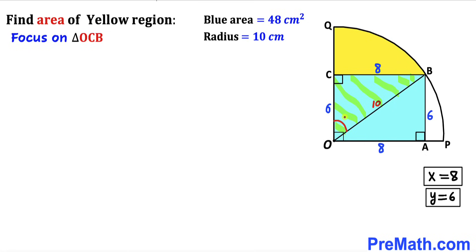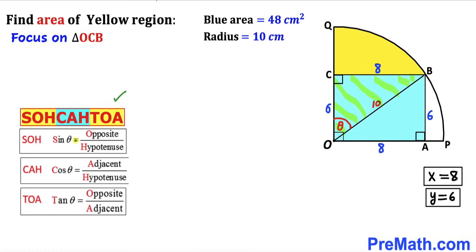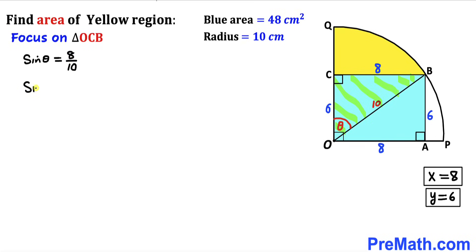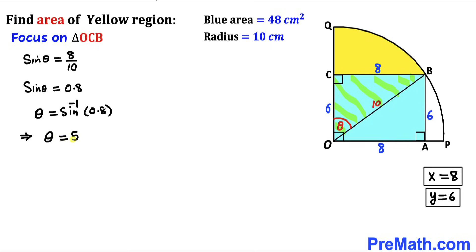Now focusing on right triangle OCB, we want to find angle theta. Using SOH-CAH-TOA: sin θ = opposite over hypotenuse = 8 over 10 = 0.8. Therefore θ = sin⁻¹(0.8) = 53.13 degrees.